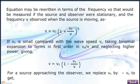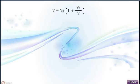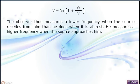For a source approaching the observer, we replace Vs by minus Vs to get ν equals ν0(1 plus Vs by v). The observer thus measures a lower frequency when the source recedes from him than when it is at rest. He measures a higher frequency when the source approaches him.